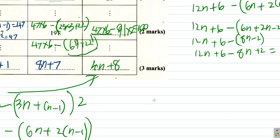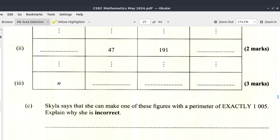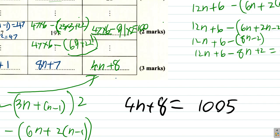So, 4n plus 8 equal, what's the name again? Skyla said her perimeter can be exactly 1005. Explain why she's incorrect. All right.